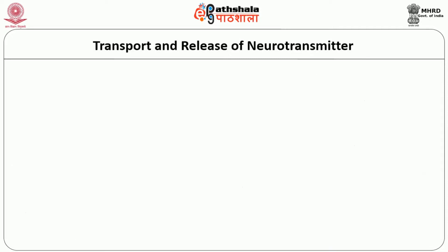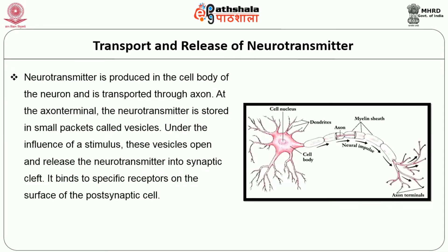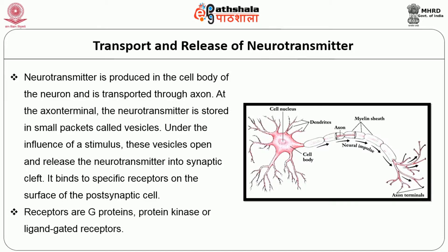Let us move on to the transport and release of neurotransmitters. The neurotransmitter produced in the cell body of the neuron is transported through the axon. At the axon terminal, the neurotransmitter is stored in small packets called vesicles. Under the influence of a stimulus, these vesicles open and release the neurotransmitter into the synaptic cleft, where it binds to specific receptors on the surface of the post-synaptic cell. Receptors are G proteins, protein kinases, or ligand-gated receptors.